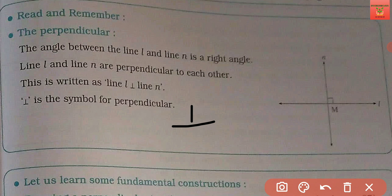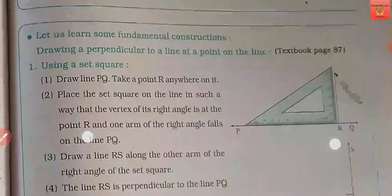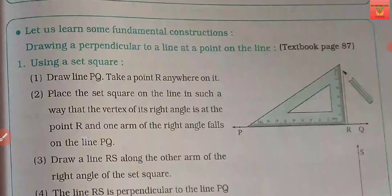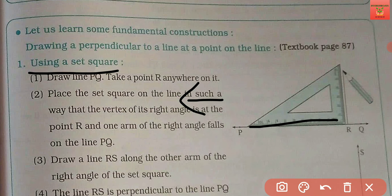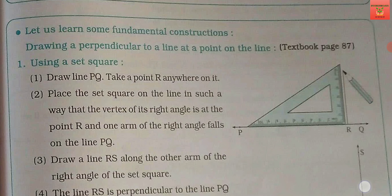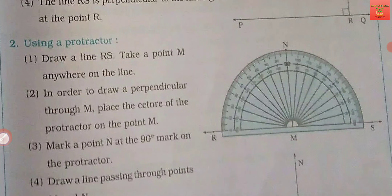Now we'll see some basic fundamental constructions. तो पहले अपना geometrical box निकाल दीजिए, साथ में एक रफ बुक रखिए। पहले हम देखेंगे set square को कैसे use किया जाता है। Set square को हम perpendicular lines बनाने के लिए use कर सकते हैं। Suppose आपने एक line draw कर दिया, set square को use करके, set square को थोड़ा सा आगे की तरफ move करके, same line पर alignment maintain करके you can draw a perpendicular line as it is done in the digest.